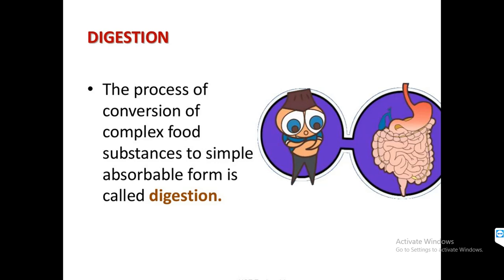Extracellular digestion is when the process of digestion occurs outside the cell — not inside a food vacuole — but outside the cell. Examples range from coelenterates and platyhelminthes up to phylum chordata and higher animals. As we covered in the previous class on different animal phyla, after the coelenterates, various features start to upgrade and the digestive system also gets upgraded. That is why the intracellular mode is changed to extracellular mode.